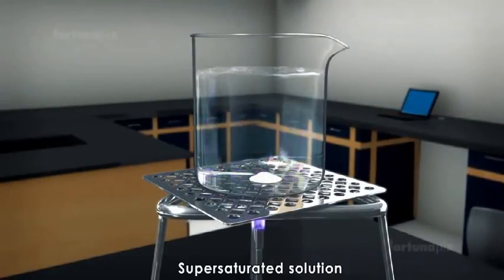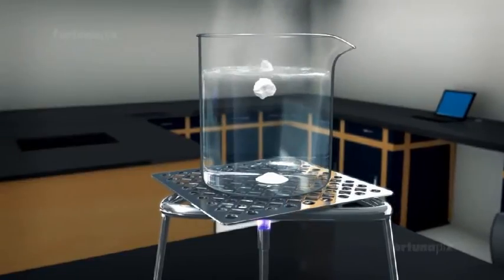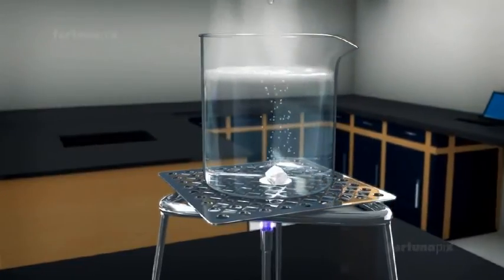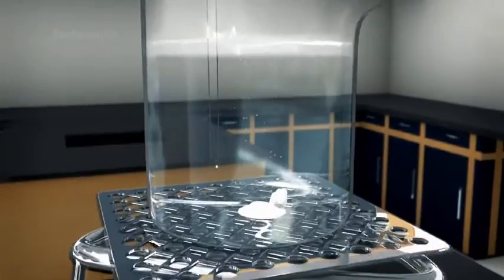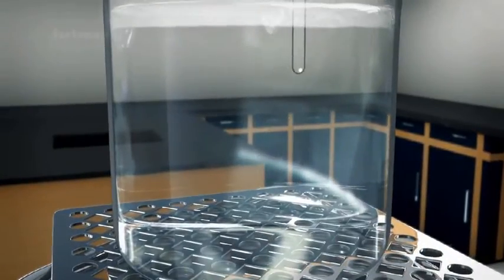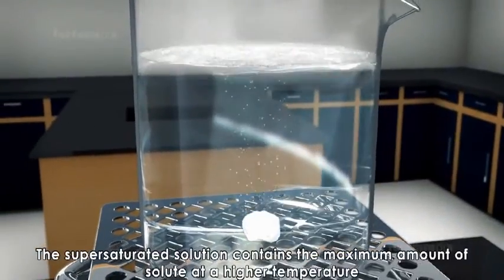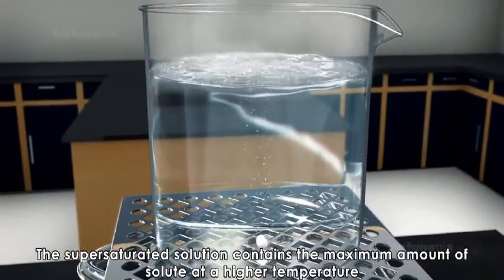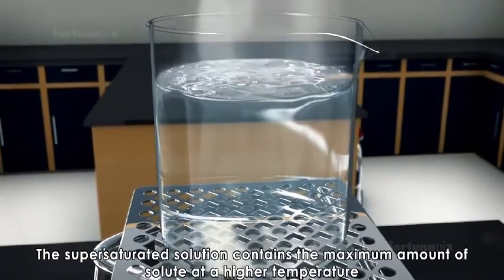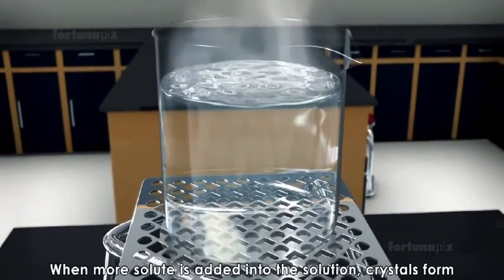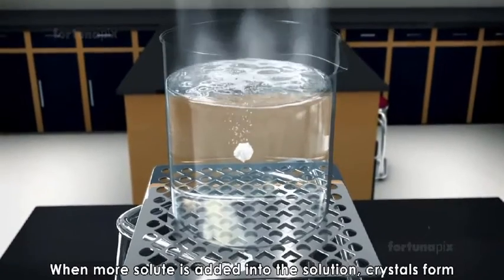When the beaker is heated, the increase in temperature alters the solubility. At a higher temperature, a solvent can dissolve more solute than it normally can. A supersaturated solution contains the maximum amount of solute at a higher temperature. When more solute is added, crystals form.